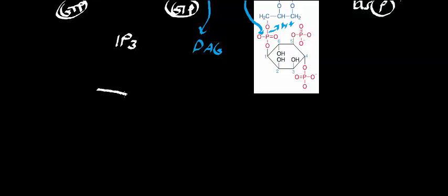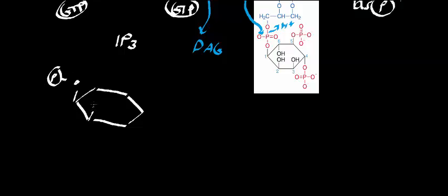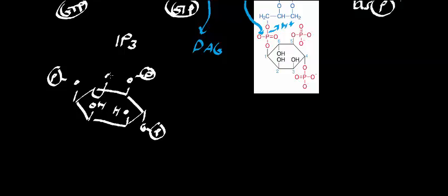I'll draw the structure of IP3. Inositols are not synthesized in humans, but the inositol ultimately comes from glucose 6-phosphate. You can sort of see the six-membered ring. So ultimately it comes from glucose 6-phosphate, and this here is IP3.